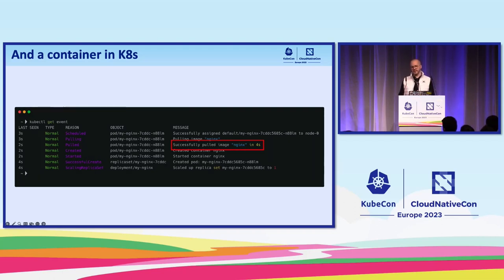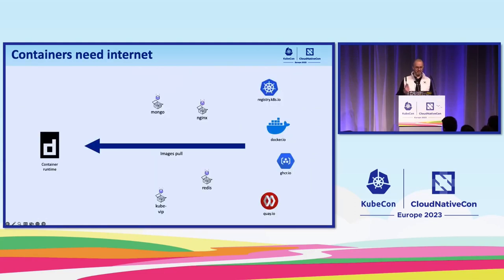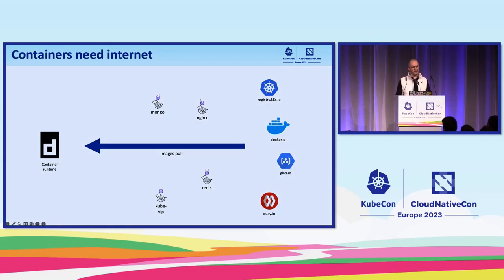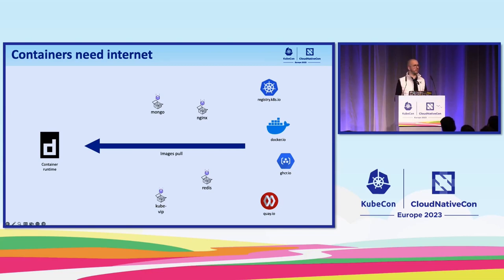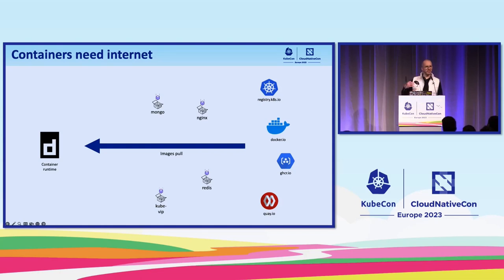The main idea here is: every time you try to get something with Docker, with containerd, with your runtime, with Kubernetes — these images are coming from the internet. There are plenty of registries on the internet. You know Docker Hub — maybe that was an initial registry — but there are plenty of registries at Google, Amazon, Azure where there are plenty of interesting containers. Every time you make a basic command to deploy a container, to deploy a pod, you specify an image and this image is coming from outside.